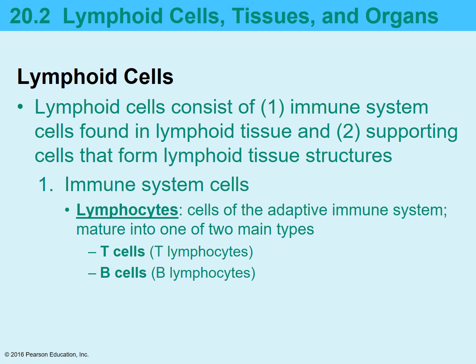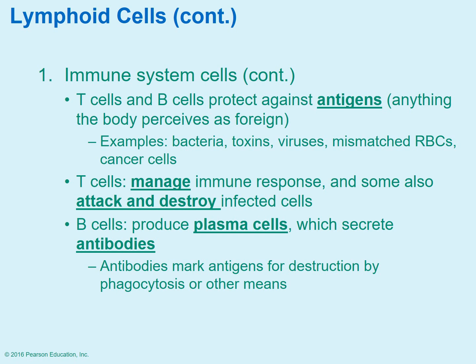Lymphoid cells are going to be composed of one of two types: either immune system cells or supporting cells. The immune system cells are the lymphocytes. They are part of what we call the adaptive immune system, and they can be subdivided into T lymphocytes or B lymphocytes — we call them T cells or B cells. T cells and B cells both help protect against any foreign substance, which we refer to as antigens — things such as bacteria, viruses, and cancer cells.